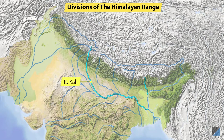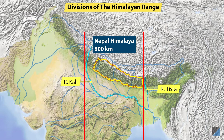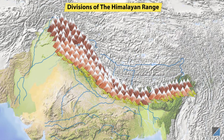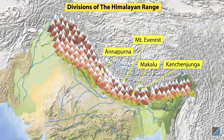The region between the Kali and Testa rivers forms the next regional demarcation. This 800 km stretch is known as the Nepal Himalaya. It gets this name as most of the division lies in Nepal. The Great Himalaya range attains maximum height in this portion. Some of the world-famous peaks such as Mount Everest, Kanchanjunga, Makalu, Annapurna and Dhaulagiri are located here.